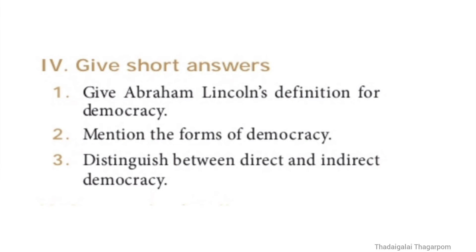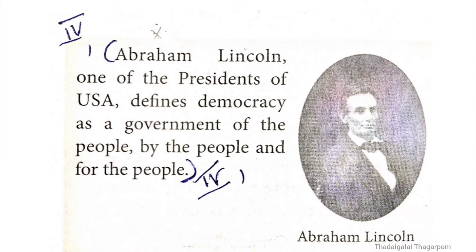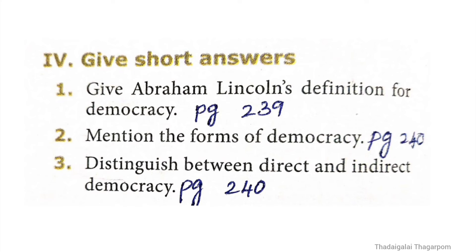Roman numeral four: give short answers. First question: give Abraham Lincoln's definition of democracy. The answer is found on page number 239, last paragraph. Abraham Lincoln, one of the presidents of the USA, defines democracy as a government of the people, by the people, and for the people.